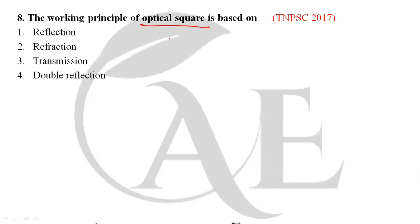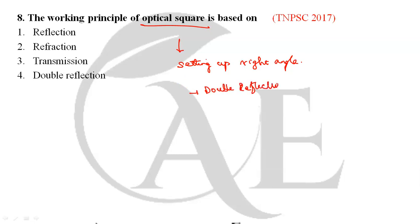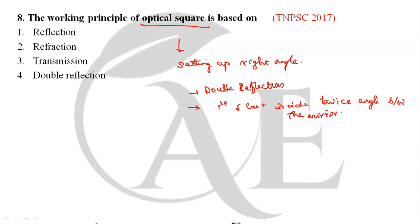Next question: the working principle of the optical square. The optical square is used for setting out right angles. It works on the principle of double reflection, where the first incident ray and the last reflected ray make twice the angle between the two mirrors. The optical square has a diameter of 5 cm and a depth of 1.25 cm. The correct answer is double reflection, option 4.